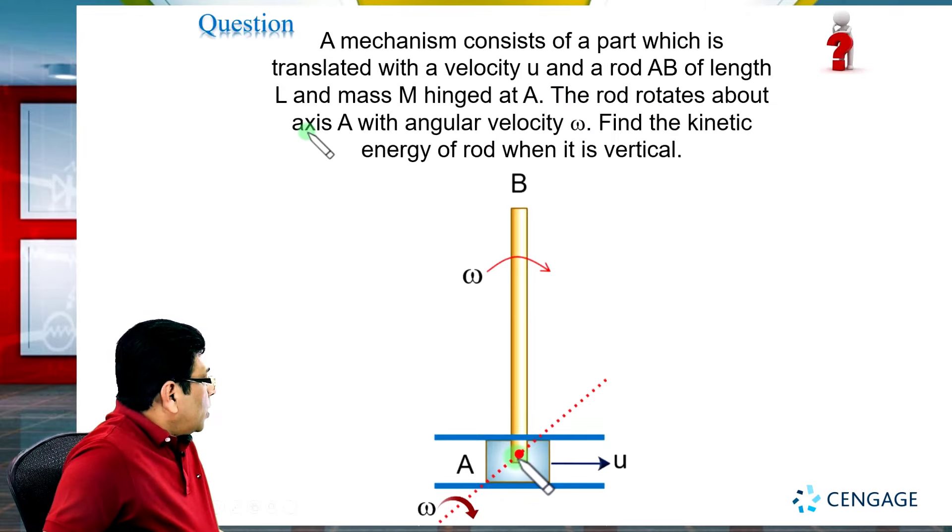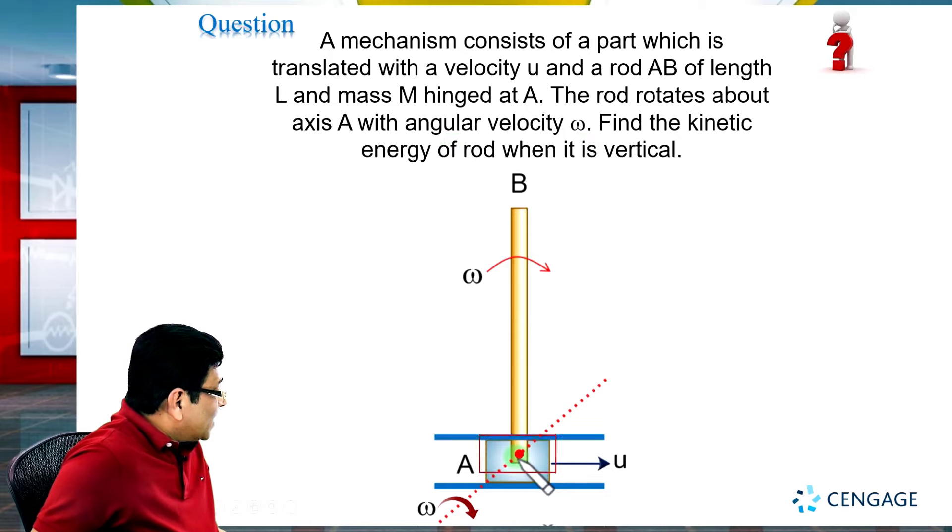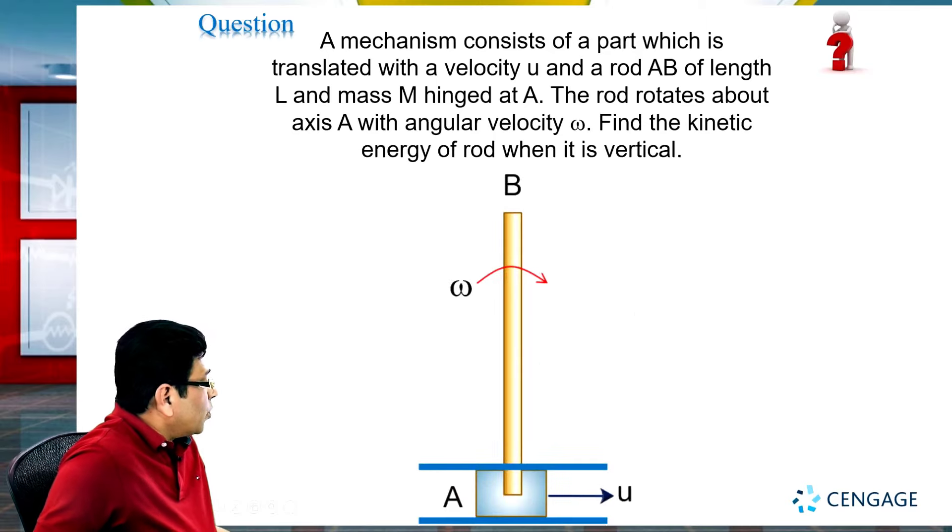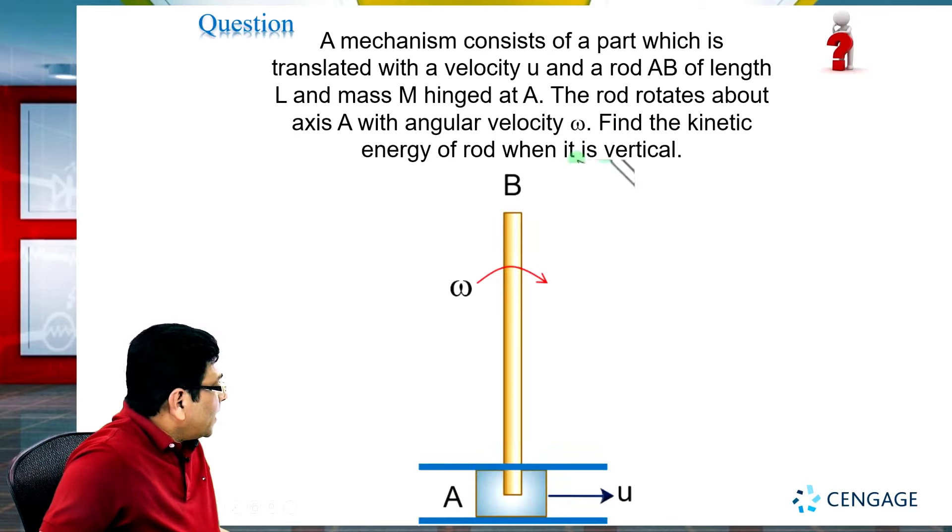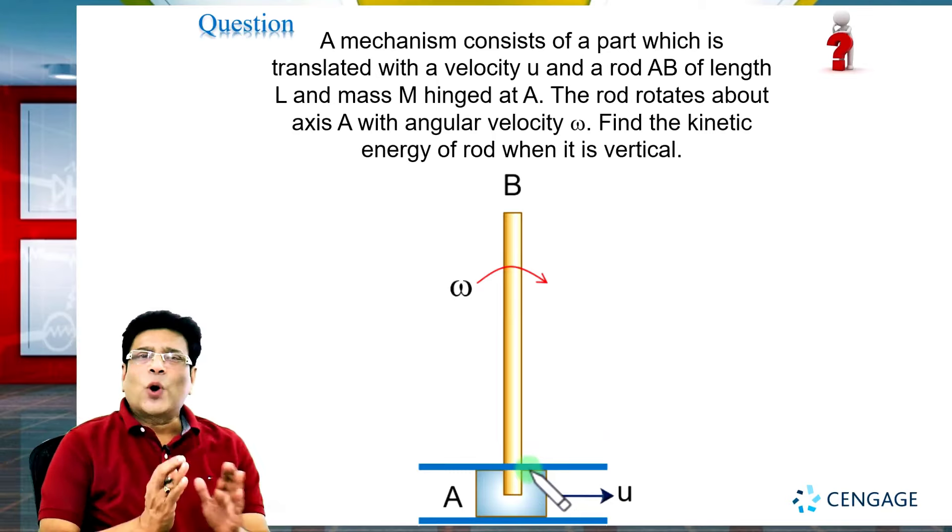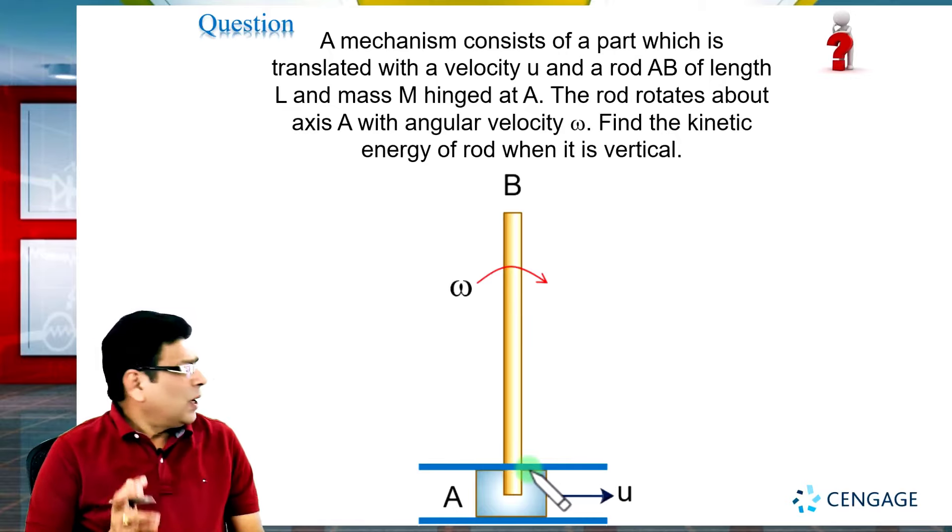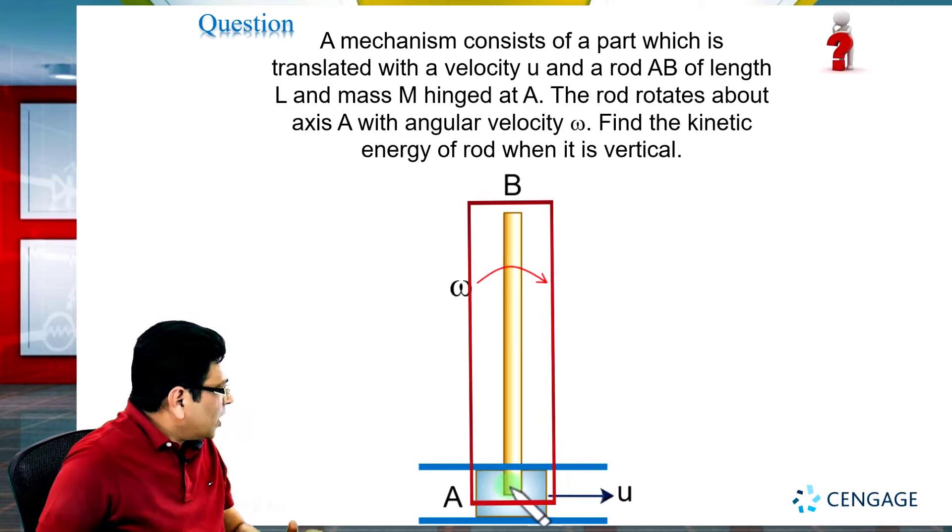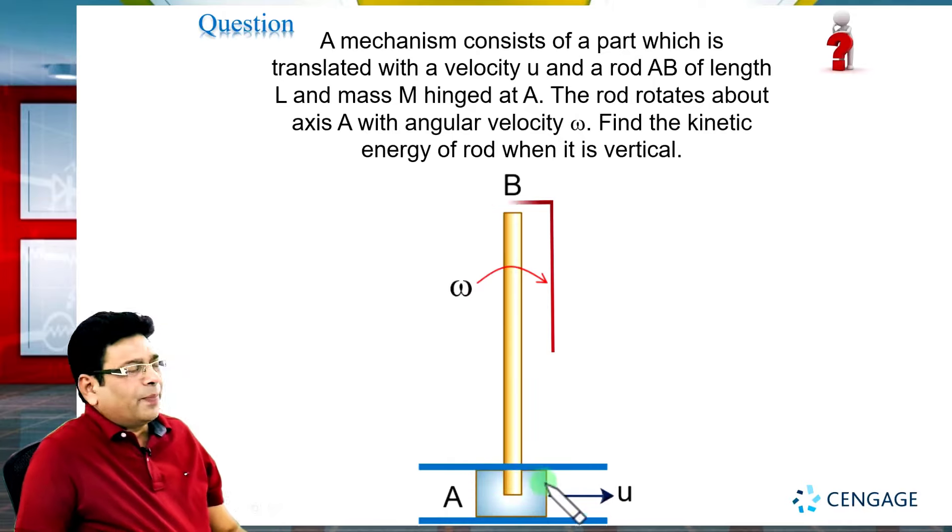The rod rotates about axis A with angular velocity omega. The rod rotates with angular velocity omega about the axis passing through the lowest point. Find the kinetic energy of the rod when it is vertical. We need to calculate the kinetic energy of the rod in this situation when the rod is vertical.